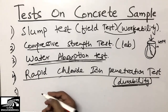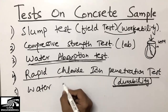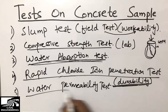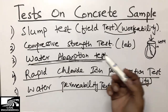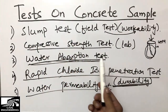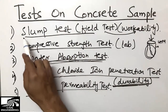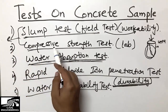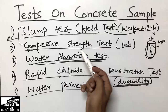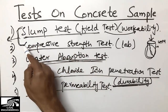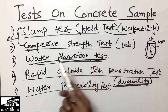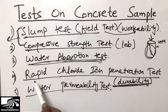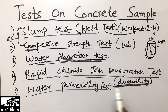The fifth and last test is the water permeability test, which is also performed on concrete. So these were the commonly used tests on concrete. The slump test and compressive strength test are used in every construction project, whether small or large. The water absorption test checks the absorption rate of the inner and outer surface, and the Rapid Chloride Ion Penetration Test checks the durability.